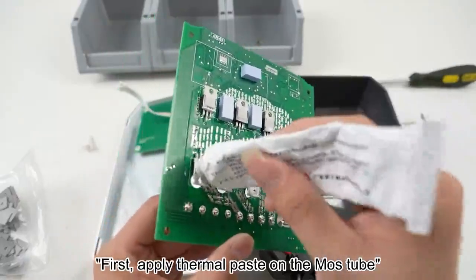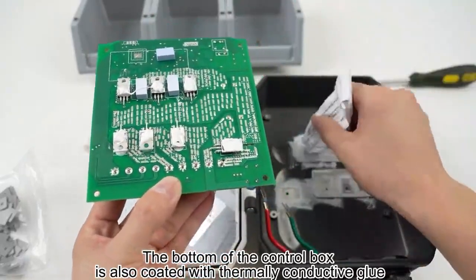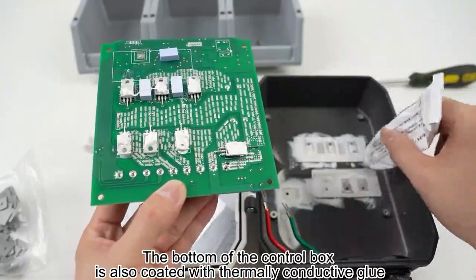apply thermal paste on the MOS tube. The thermal paste must be applied evenly. The bottom of the control box should also be coated with thermal paste.